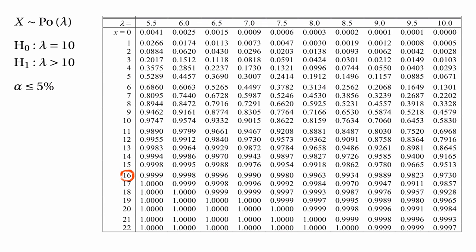We'd reject the null hypothesis if x equals 16 because 1 minus 0.9513 is 0.0487. But we wouldn't reject if x were equal to 15, because the probability that x is greater than or equal to 15 is 1 minus the probability that x is less than or equal to 14, which is 1 minus 0.9165, giving 0.0835 — more than 5%. So the critical region is the numbers 16, 17, 18 and higher.